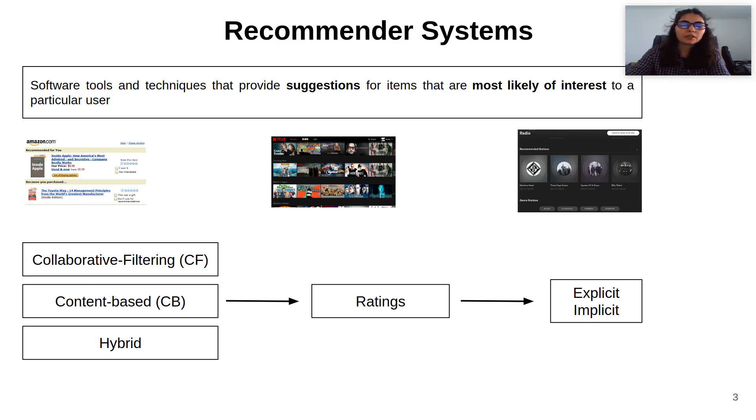The main approaches in recommender systems are collaborative filtering, which is based on similarity between the ratings of several users of a system; content-based, which is based on the features of the items being recommended; and hybrids, assembling collaborative filtering and content-based.